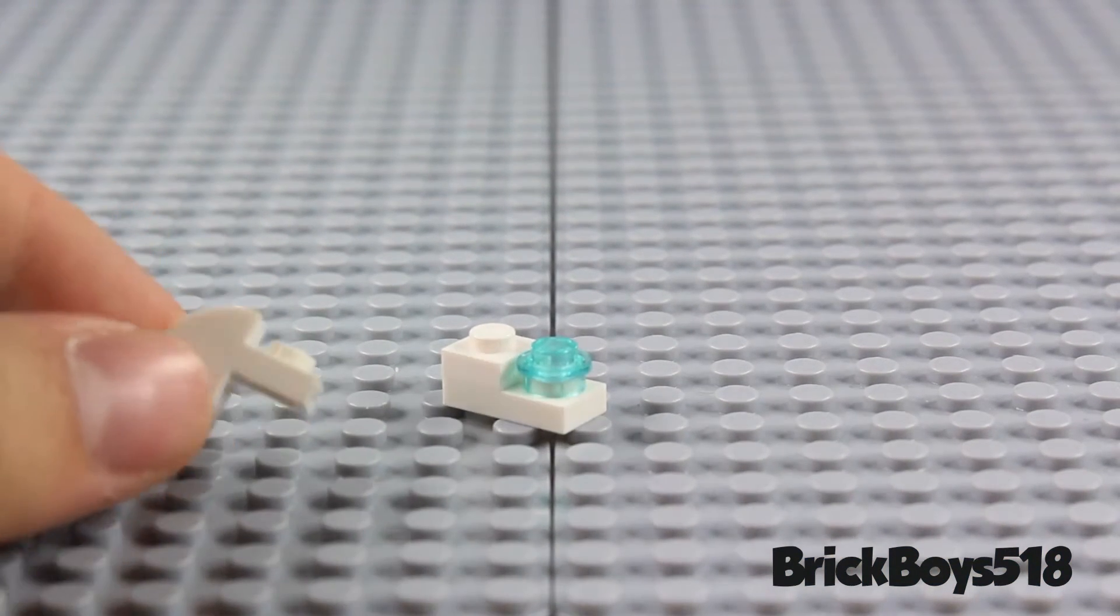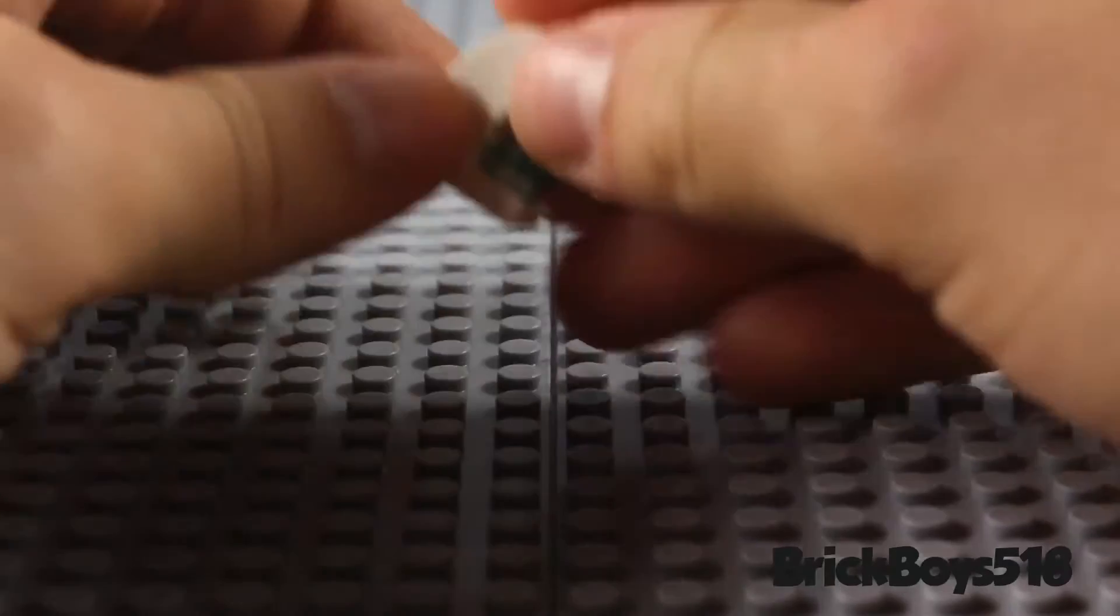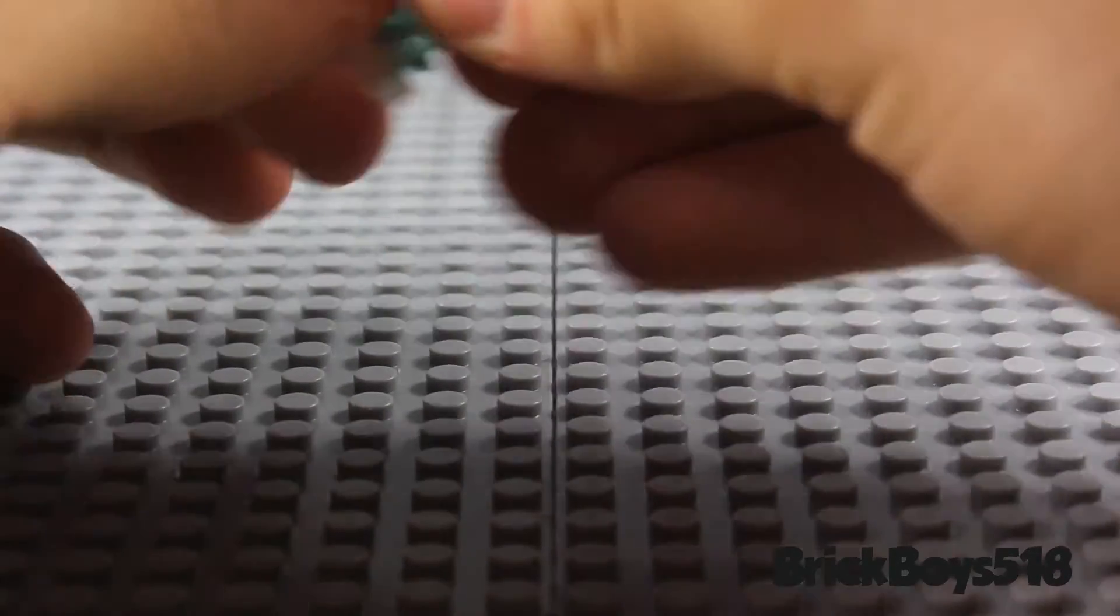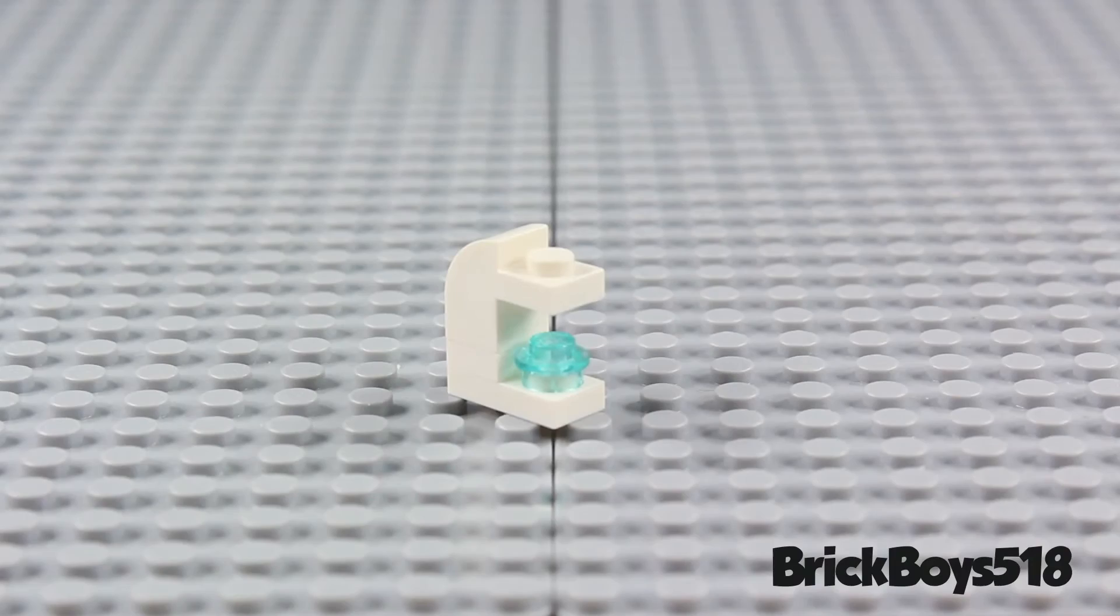And then you're going to take a 1x2 rounded slope. So one of these elements here. And you're just going to attach it right on the back. And your microscope is going to come together.